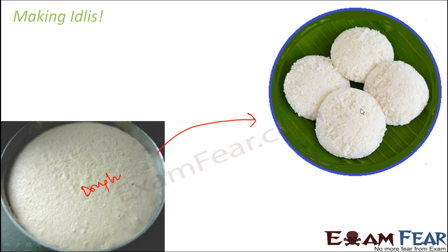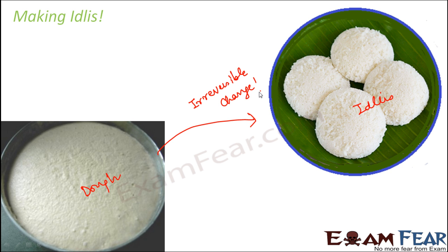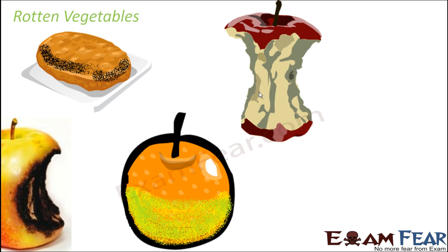Here you observe a change — first you had the dough, and later you have these idlis. What kind of change is this? Can you get back the dough from the idlis? Not really. So this is an example of irreversible change, because you cannot reverse the process to get back the initial product. Also, a lot of chemical changes are involved during the process of making idlis.